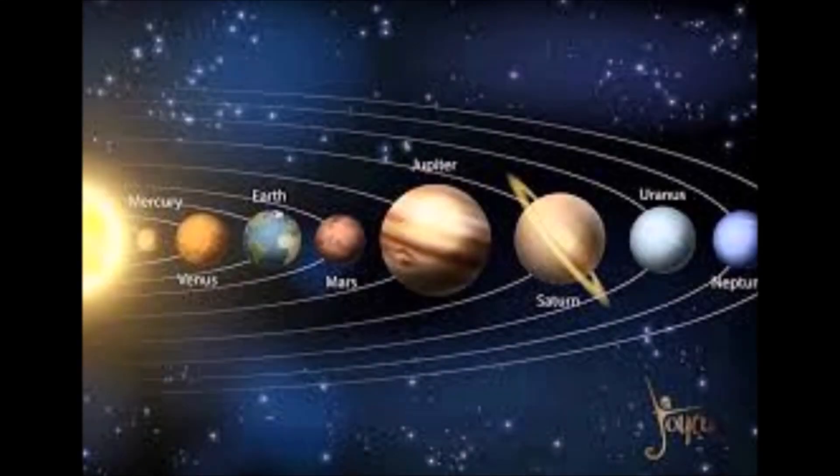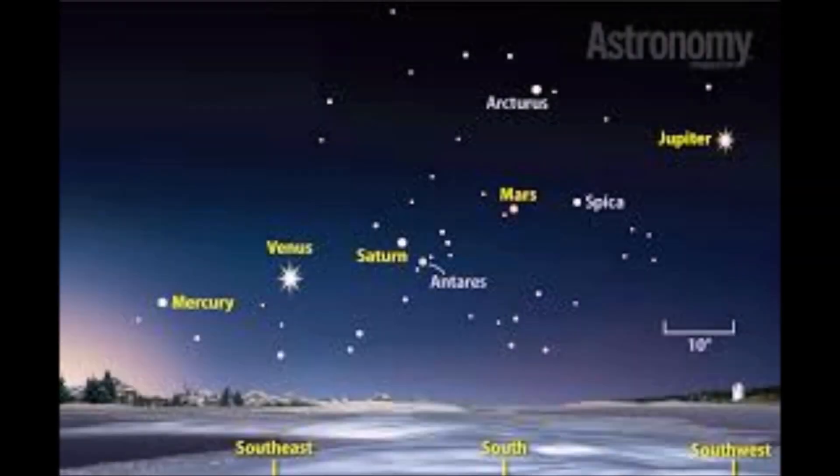For the second time this year the five brightest planets can be seen at the same time. You can catch them by looking towards the western sky after sunset. The planets will form a line rising up from the horizon.